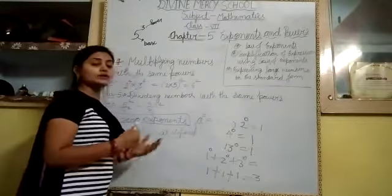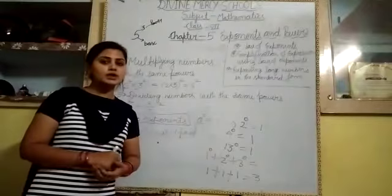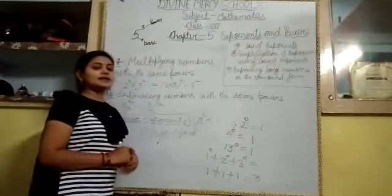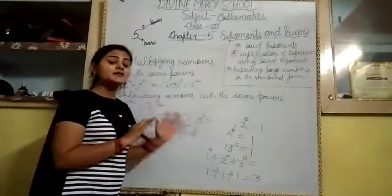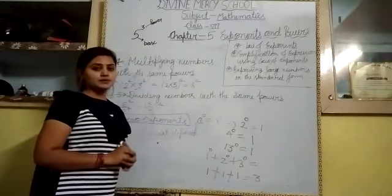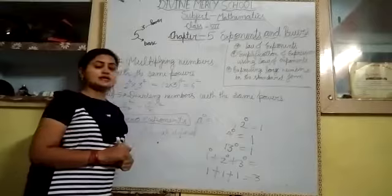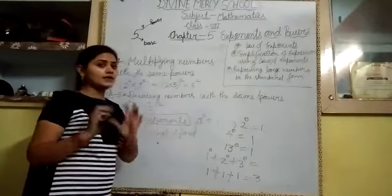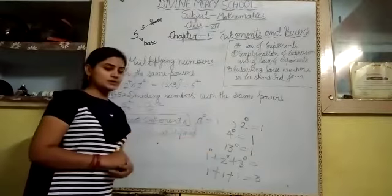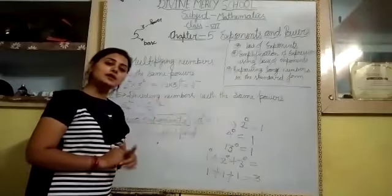If you are thinking that zero power zero equals one, that is wrong. If zero power zero is there, then we cannot define that number. But if any non-zero digit is raised to the power zero, then we can define it as one.